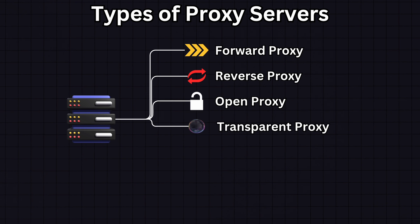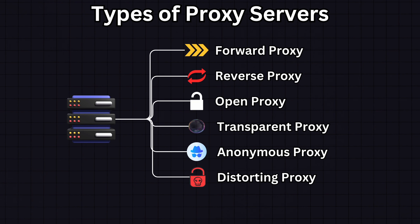We also have transparent proxy, which passes along requests and resources without modifying them. It's visible to the client and is often used for caching and content filtering. Next is anonymous proxy, which is identifiable as a proxy server but does not make the original IP address available — used for anonymous browsing. We also have distorting proxies, which provide an incorrect original IP to the destination server, similar to an anonymous proxy but with purposeful IP misinformation.